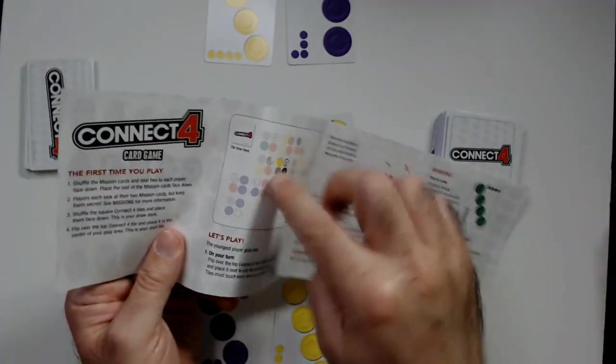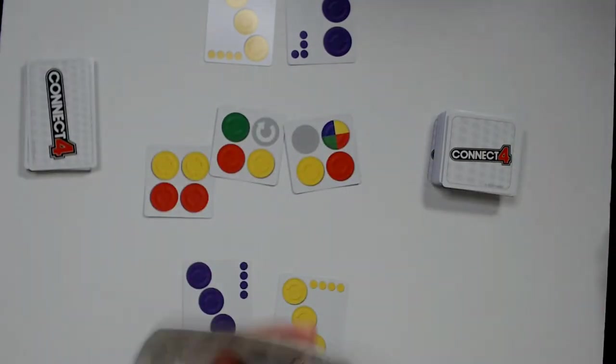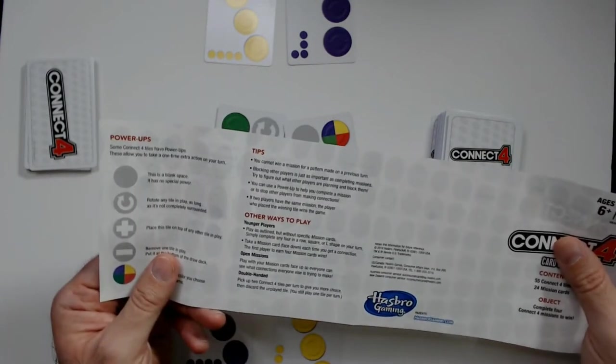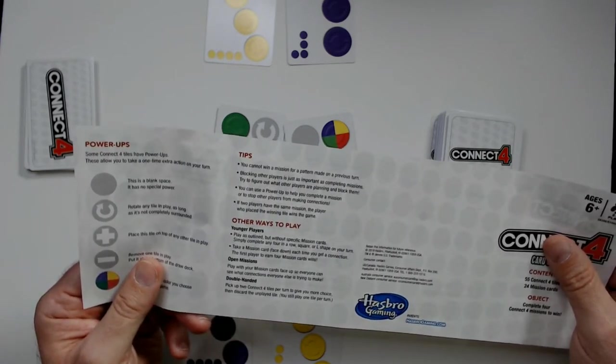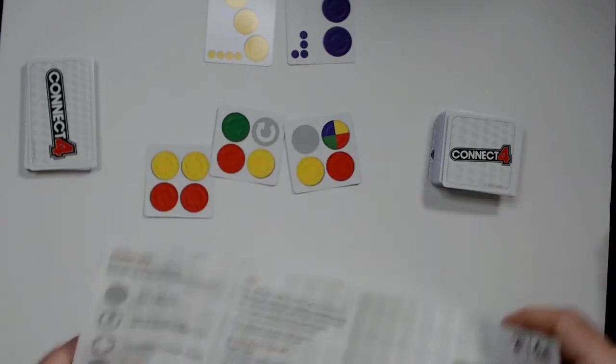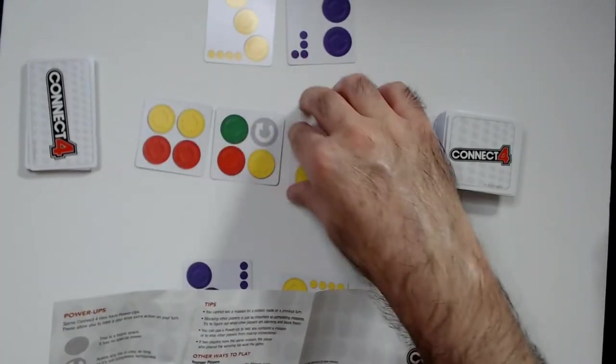Your board is going to look something like that towards the end. You have specials here - blank has no special power. Rotate: as long as it's not completely surrounded, you can rotate it. If it's locked in before, you can't rotate it. Right now it can rotate.